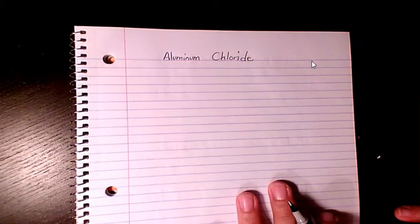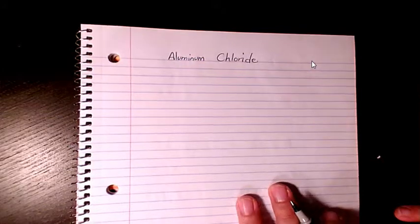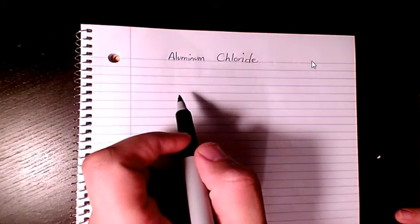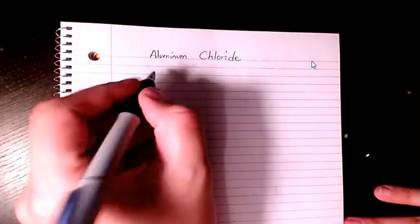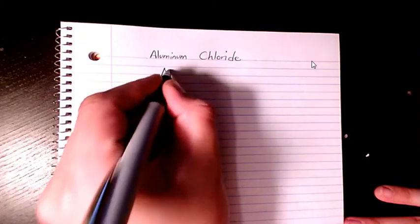What's up guys, this is Massey. Welcome to my channel. In this video I want to write the molecular formula for this compound, which is aluminum chloride. Aluminum is Al, it is a metal, and chloride is Cl.